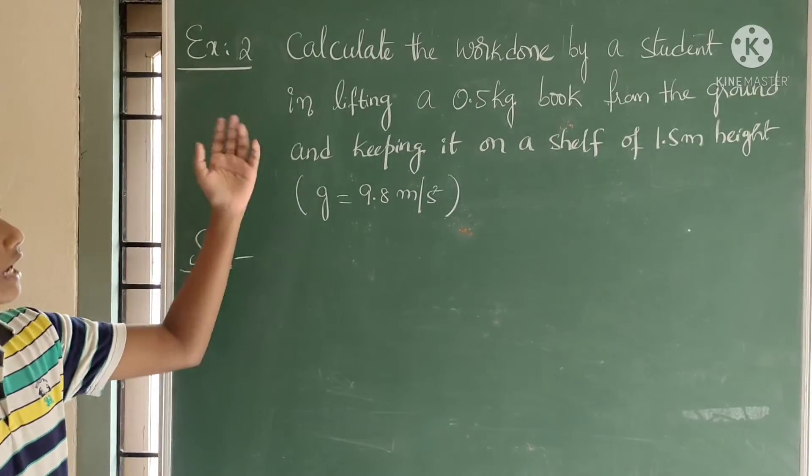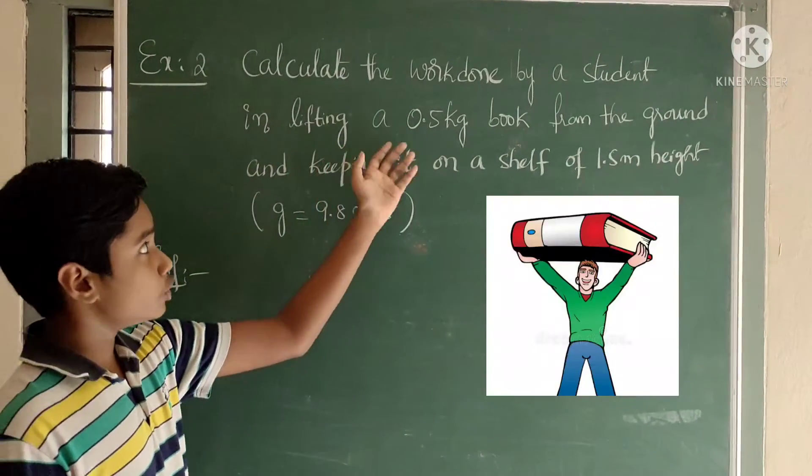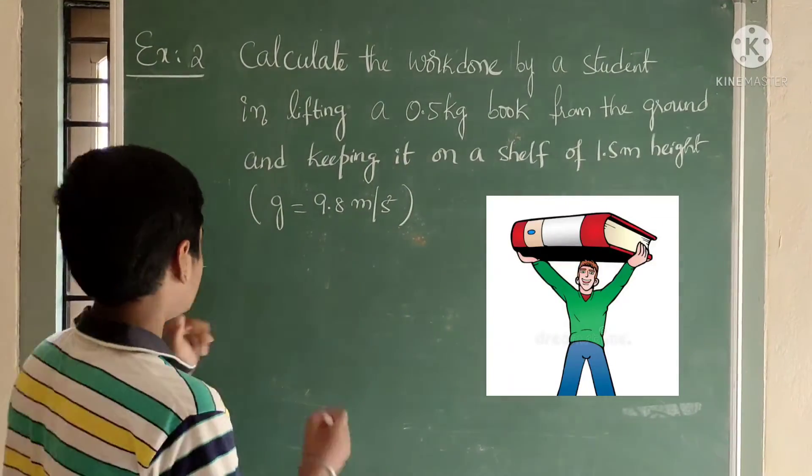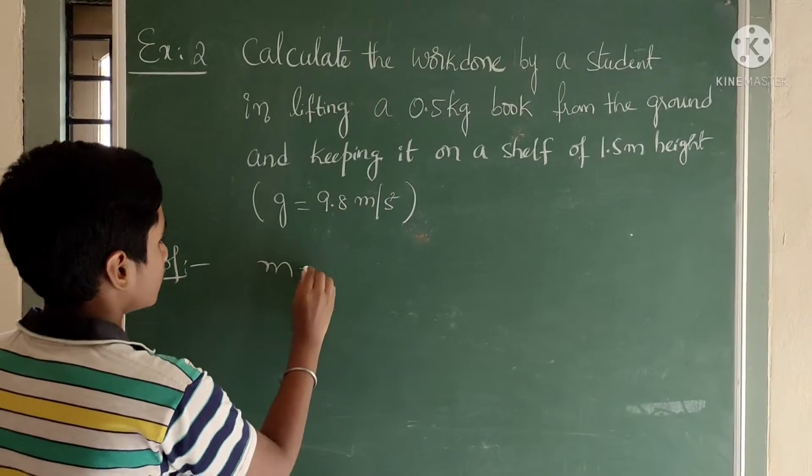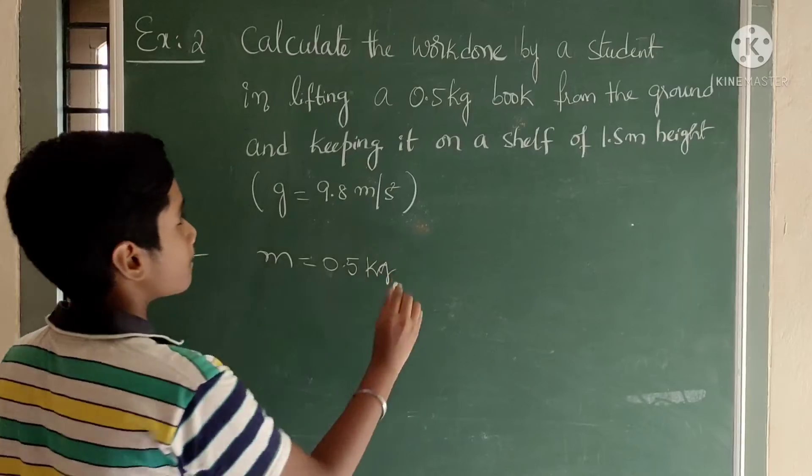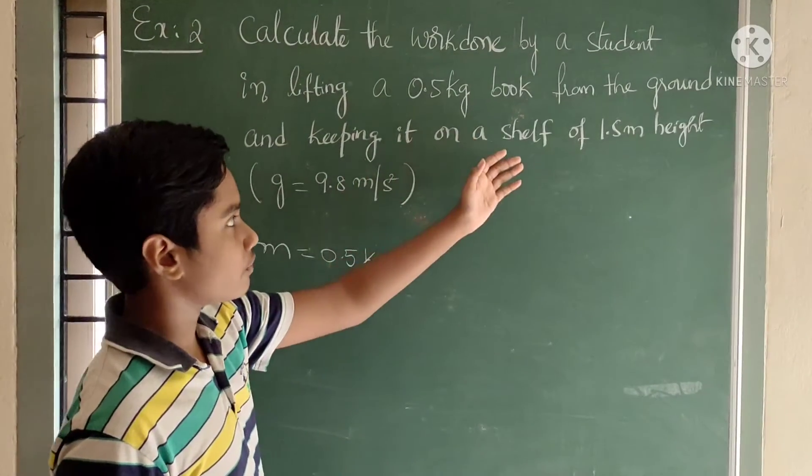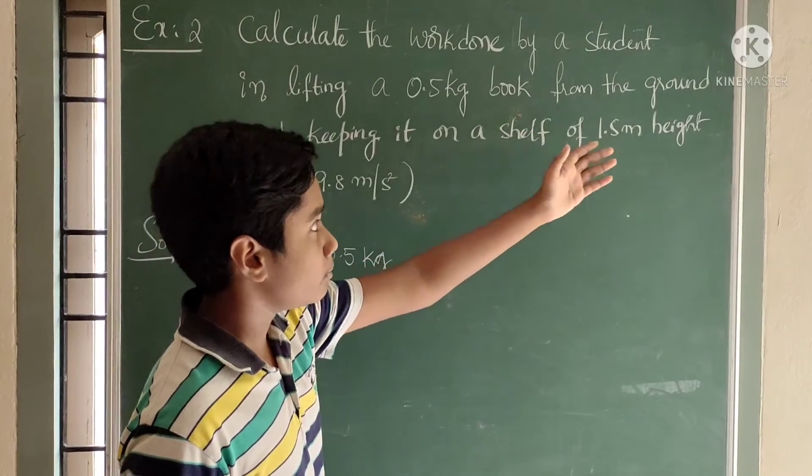Now we will see second example. Calculate the work done by the student in lifting a 0.5 kg book. That means mass of the book M is equal to 0.5 kg from the ground and keeping it on a shelf of 1.5 meters height.